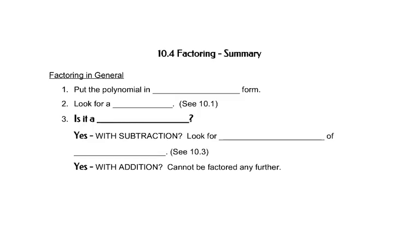So in this section, we want to put everything together. Here's the steps. First, you need to put the polynomial in standard form. Then you need to look for greatest common factor. We've done that in every problem we've worked in 10.1 through 10.3, but where we talked about it first was in 10.1.